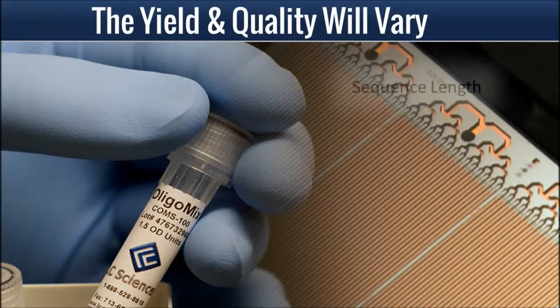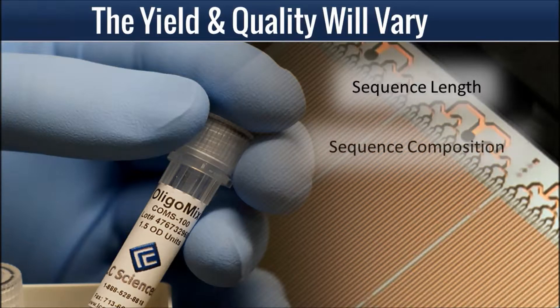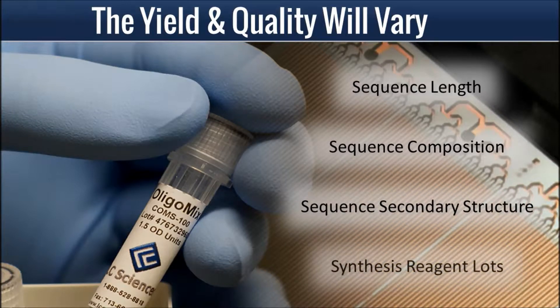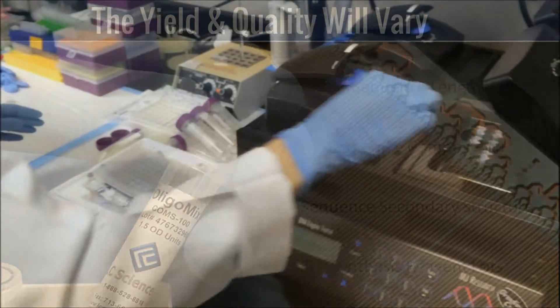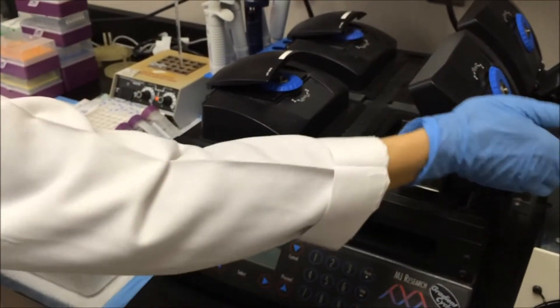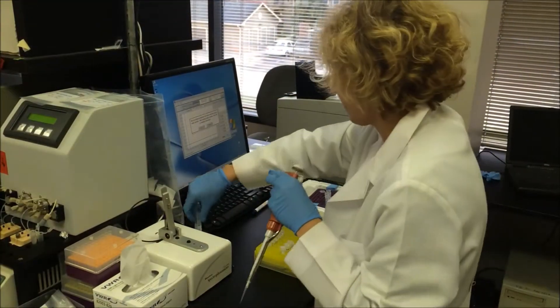As with all standard oligonucleotide synthesis, the yield and quality of the final material will vary depending on the sequence length, sequence composition, sequence secondary structure, variation in synthesis reagent lots, and other factors. We quality control each OligoMix by mismatch hybridization, qPCR, and nanodrop before shipping.